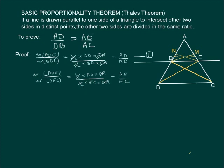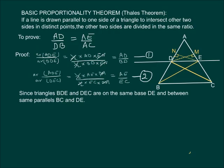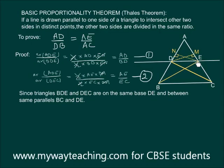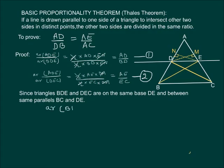Now since triangles BDE and triangle DEC are between the same parallels and on the same base, area of triangle BDE is equal to area of triangle DEC.